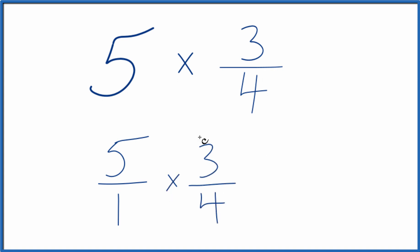When we multiply fractions, we multiply the numerators and the denominators. 5 times 3 is 15. 1 times 4, that's 4.